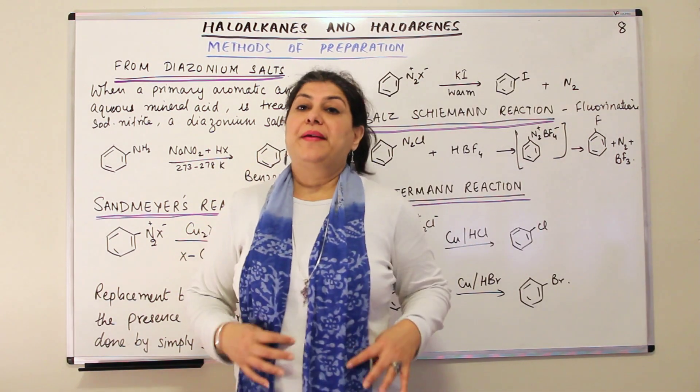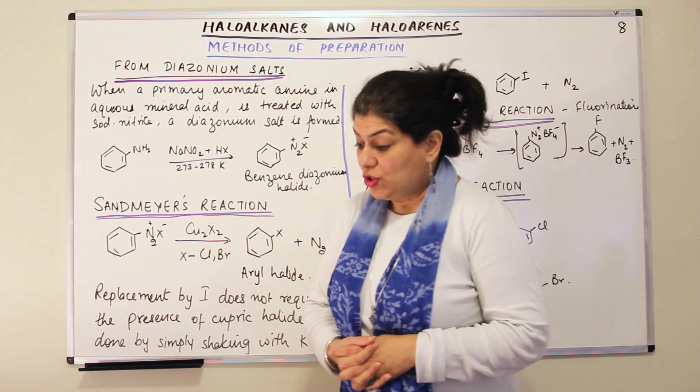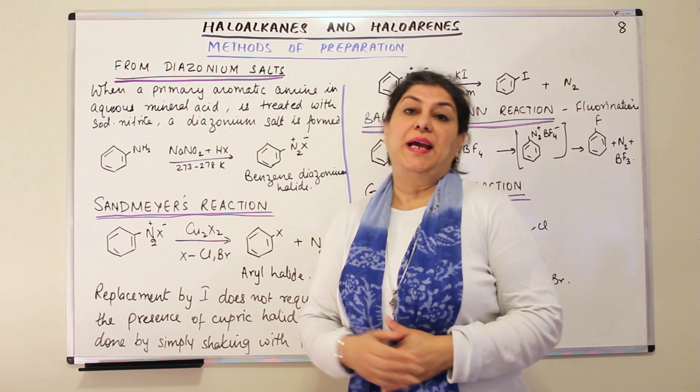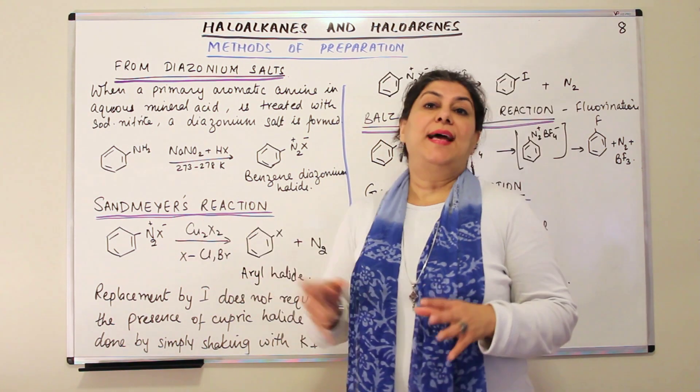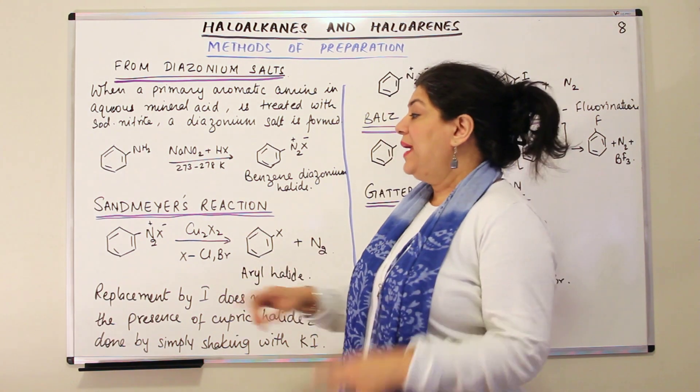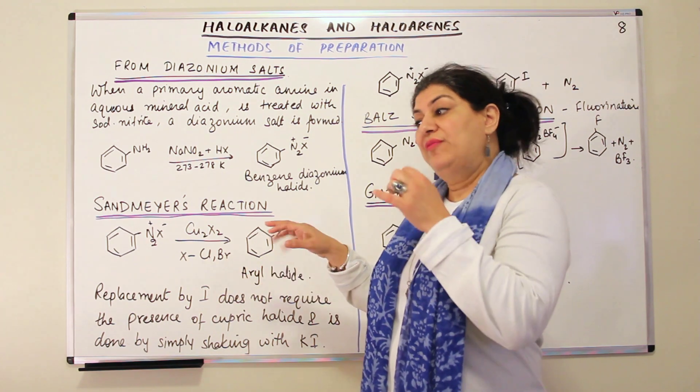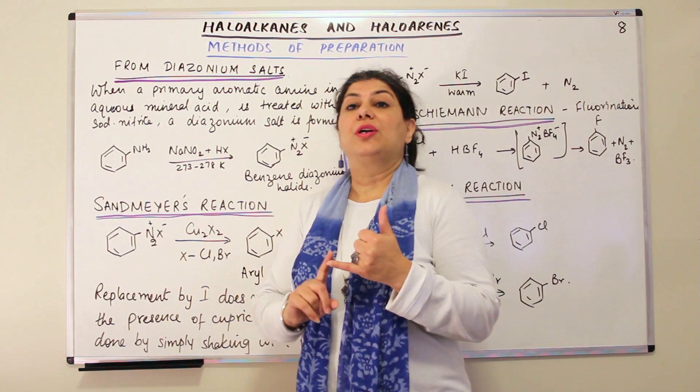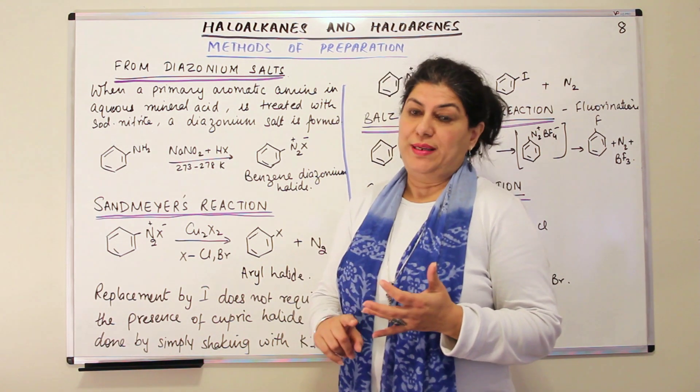So how do we prepare the aryl halides from these diazonium salts? There are three named reactions that will fall into this category. The first named reaction is Sandmeyer's reaction. In Sandmeyer's reaction, you make the diazonium salt react with cupric halide. And usually, by Sandmeyer's reaction, you get the chloro and the bromo derivatives. That is chlorobenzene and bromobenzene.